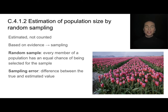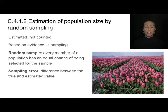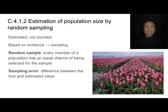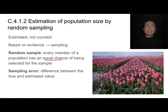Oftentimes what we're asked to do is to estimate a population size, and it's important to say that we are estimating — we are not counting, especially for populations that are really huge. It's impossible to count every single individual, but we do need to base it on evidence; we can't just guess. What we need to do is create a random sample, and a random sample is random if every member in that population has an equal chance of being selected.